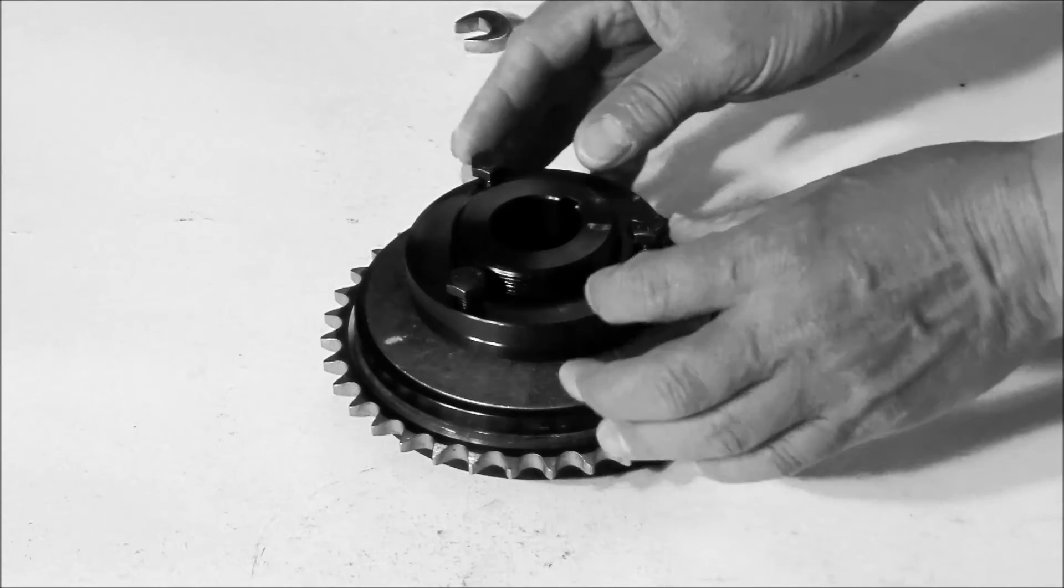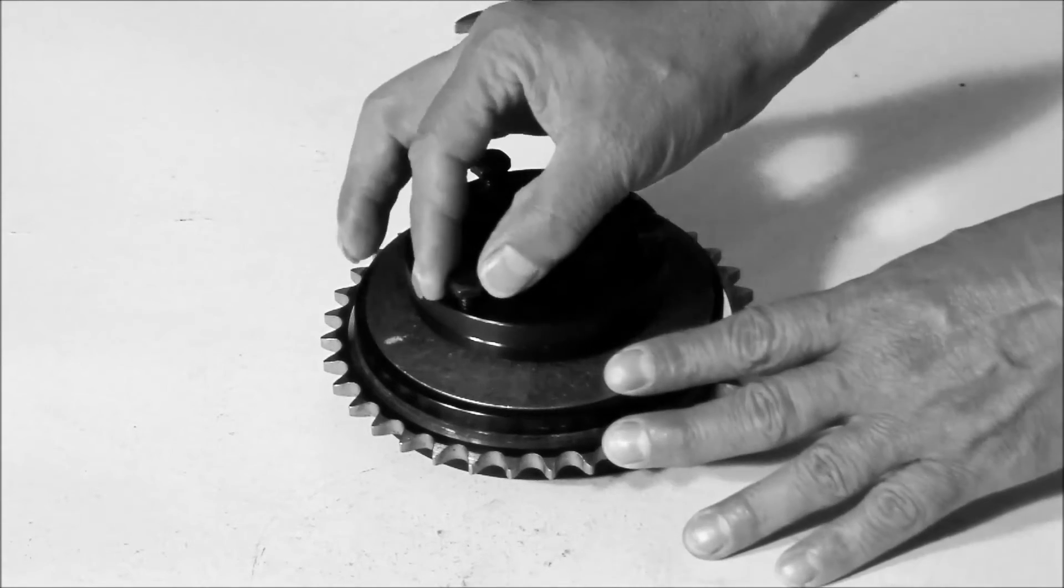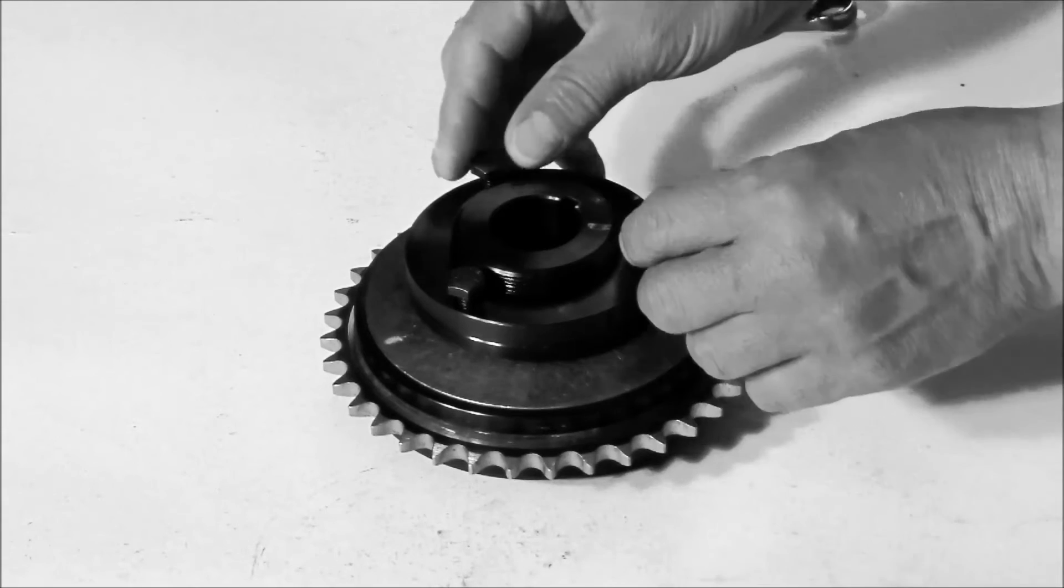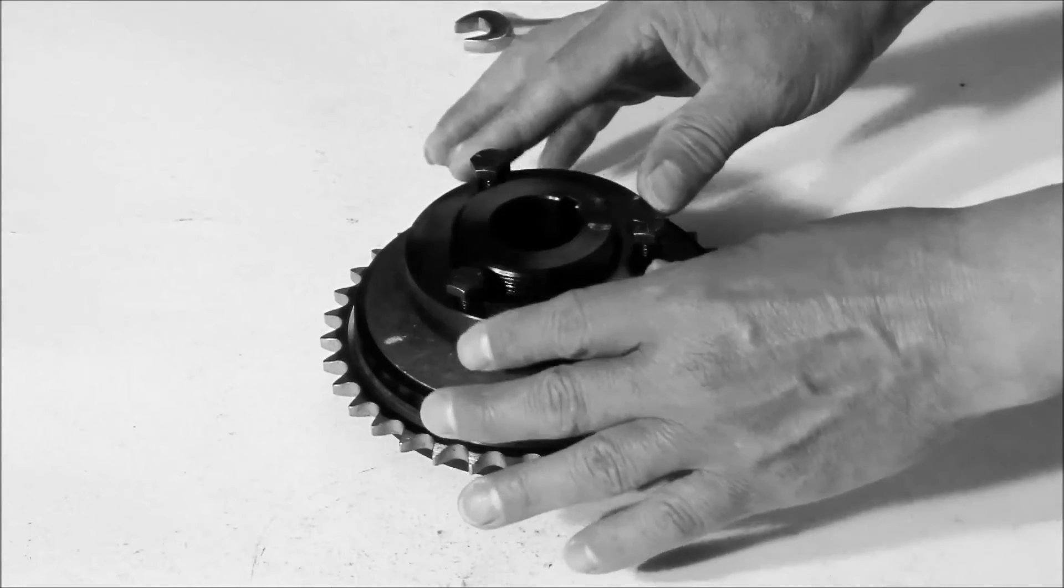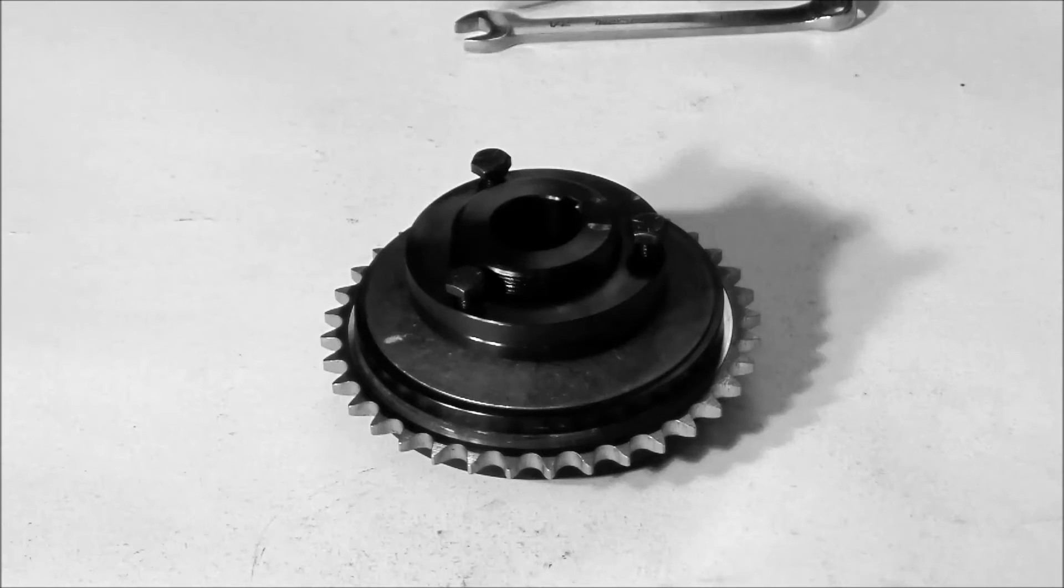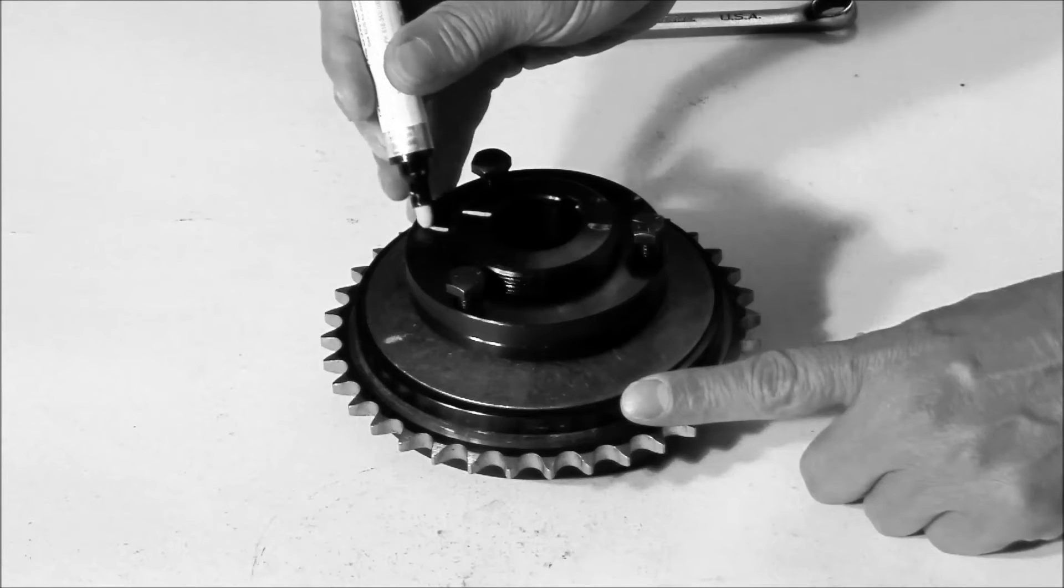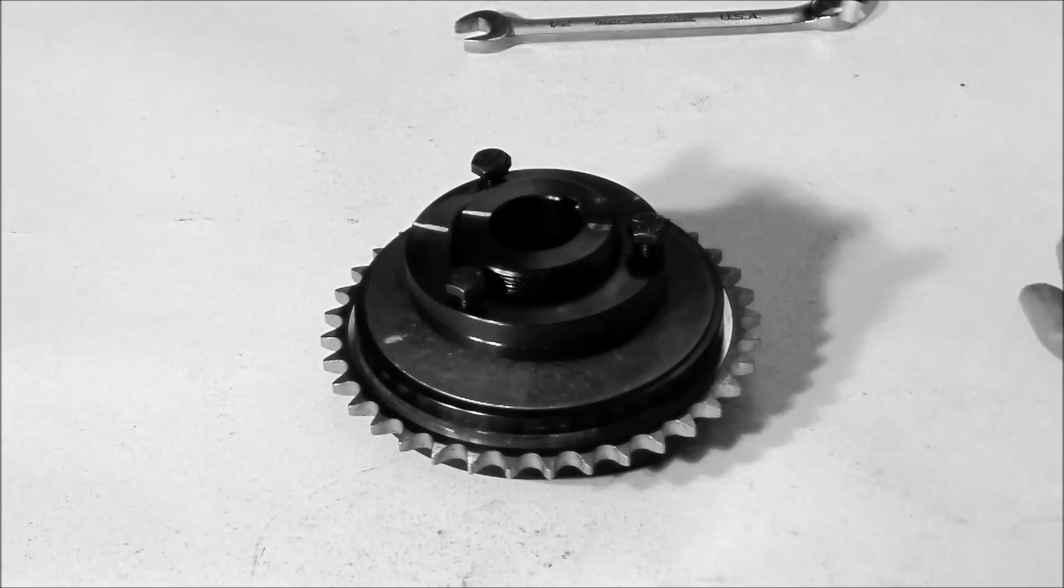The first thing to do is make sure that all the adjustment nut screws are loose, make sure they're not hitting that spring retainer. This is already just hand tight on here. Then we're going to take a paint marker and just mark the hub and the spring retainer to give ourselves a reference point.